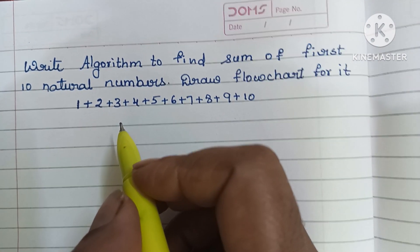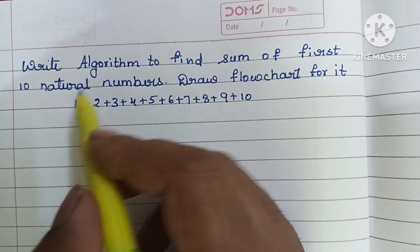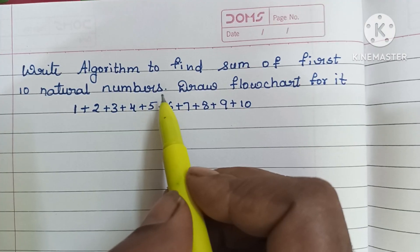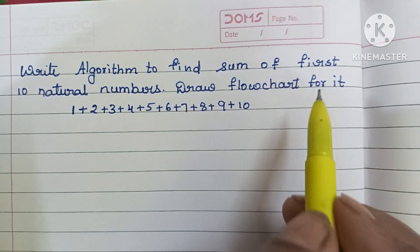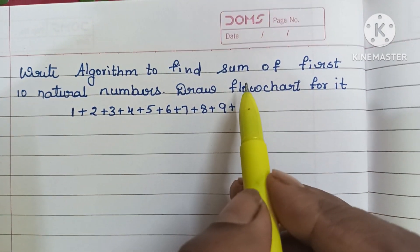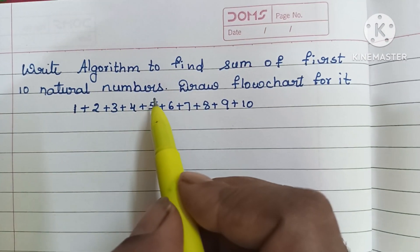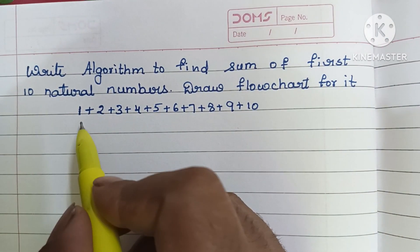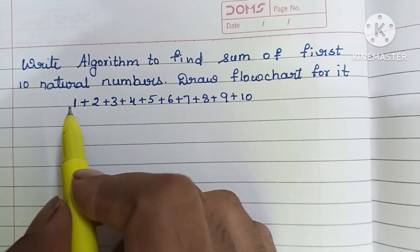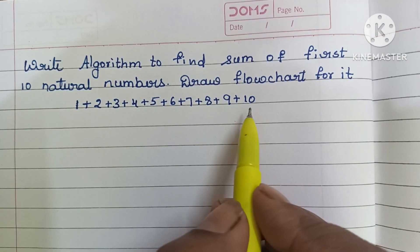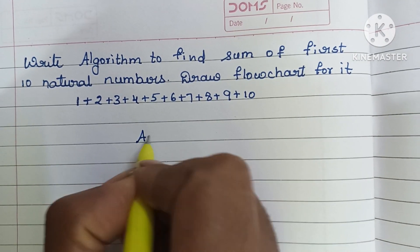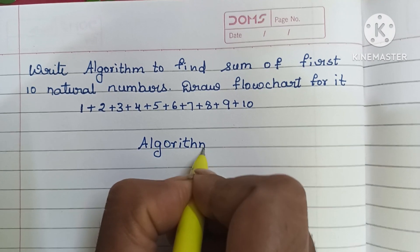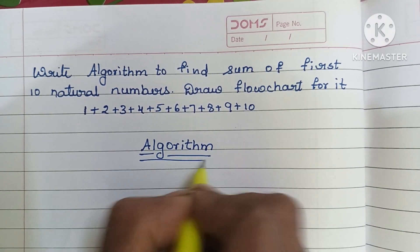In this video we are going to learn how to write an algorithm to find the sum of the first 10 natural numbers and draw a flowchart for it. We have to find the sum of numbers from 1 to 10. First we are going to write the algorithm. An algorithm is a step-by-step process to solve a problem.